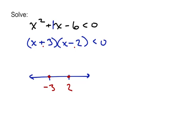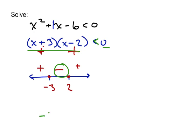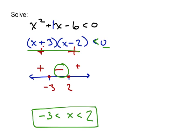Testing each interval: pick something very negative like negative 1 billion — this factor is negative, and negative 1 billion minus 2 makes this factor also negative, so negative times negative is positive. Pick something in between like 0: 0 plus 3 is positive, 0 minus 2 is negative, so this is negative. Pick something very positive like positive 1 billion: 1 billion plus 3 is positive, 1 billion minus 2 is also positive, so the product is positive. We want to know when the expression is less than 0 — that's the negative region — so our solution is when x is between negative 3 and 2, not including the endpoints since this is strictly less than.